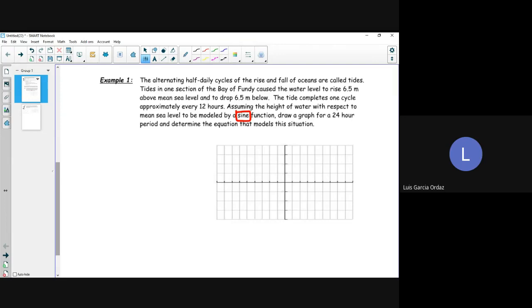So we want to draw a graph for a 24-hour period and determine the equation that models this situation. Based off this word problem, what can we assume about the equation of the axis? So c is equal to zero. So remember that's the max plus the min divided by 2.